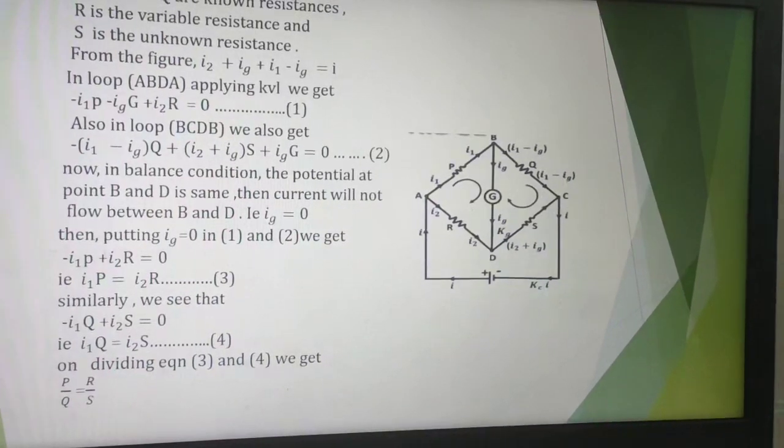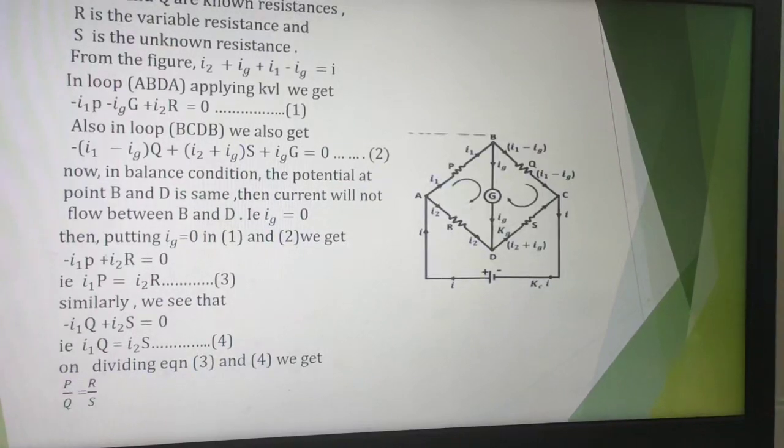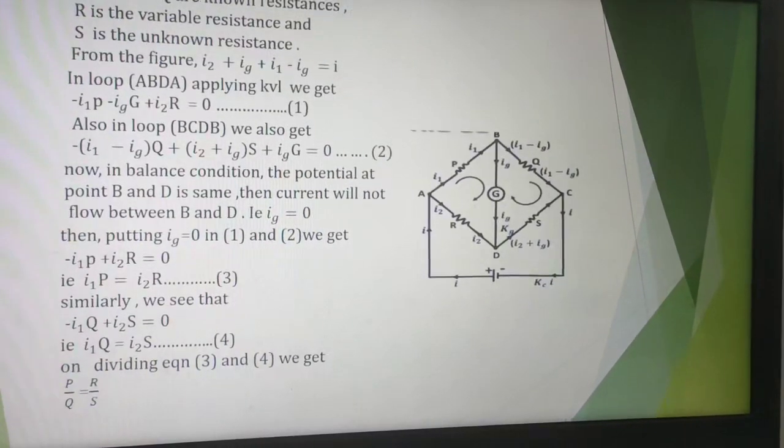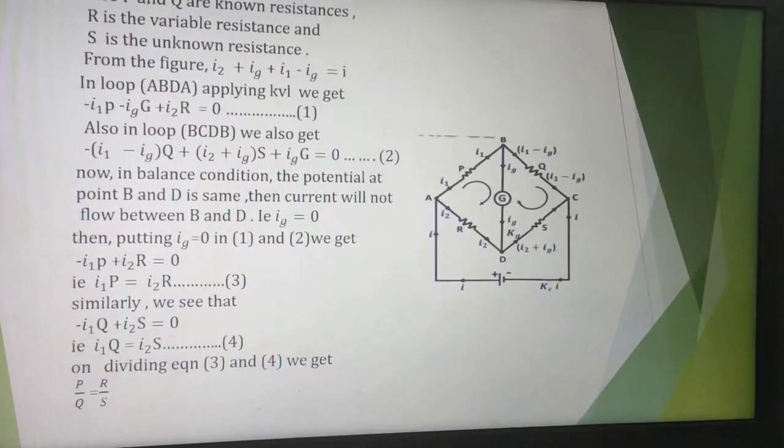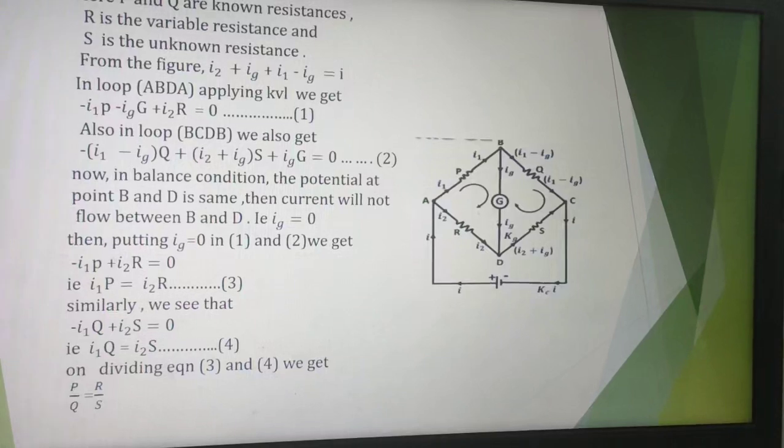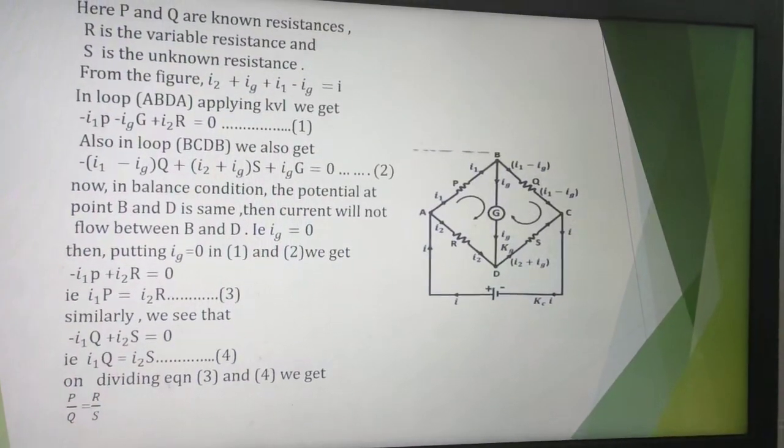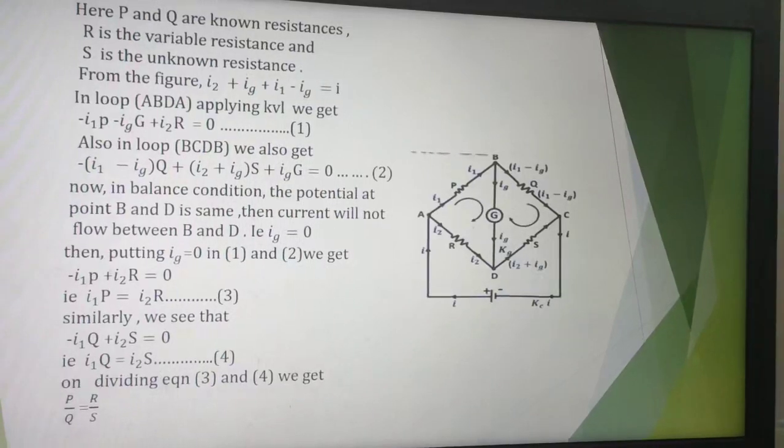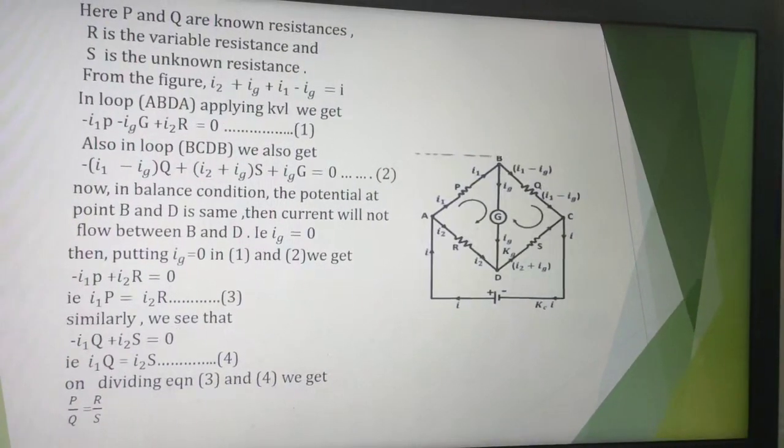Now as we have seen that Wheatstone bridge follows the principle of null deflection which says that in balance condition the potential at B and D is same, so there will be no current flowing between point B and D, which means IG = 0. Then putting IG = 0 in equations 1 and 2, we get -I1P + I2R = 0, that is I1P = I2R. This is equation 3.